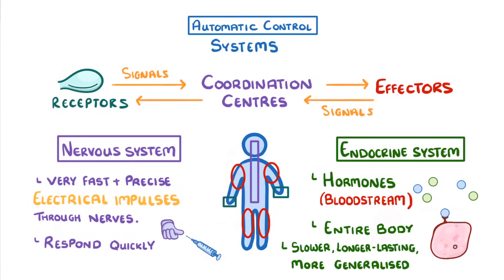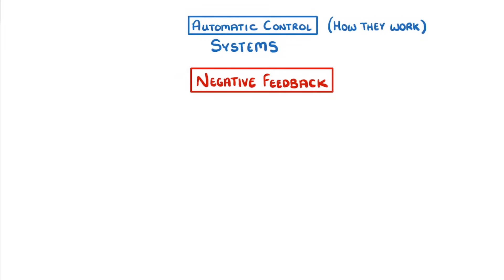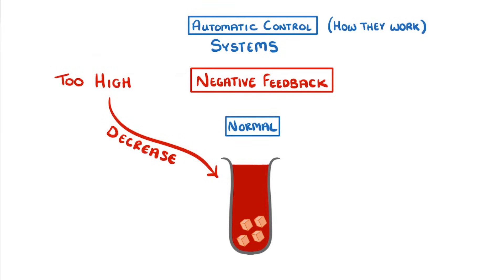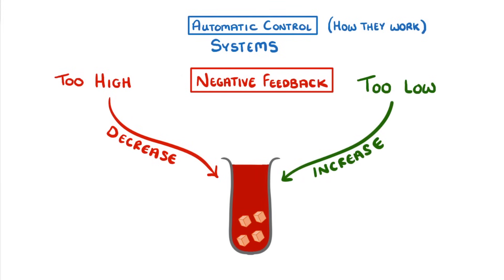So we've now looked at the different components of the automatic control systems and also how they communicate with each other. The last thing we need to consider is how these systems actually work in real life. The mechanism is called negative feedback, and it's actually pretty simple once you understand it. Basically, whenever the level of something gets too high, like the level of glucose in our blood, negative feedback acts to decrease it again to return it to normal. But if it gets decreased too much and the level is now too low, negative feedback will just increase it again. So it basically just does the opposite of whatever the change was.